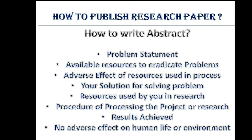The fifth point is what research materials or instruments you have used for the project, whether experimental or otherwise — mention those materials clearly. The sixth point is the procedure or method of processing the project — in what way you are going to process your complete project. The seventh point is whatever final results are achieved. And the eighth point, which you should write at the end of every abstract, is that your project or research has no adverse effect on human life or environment.